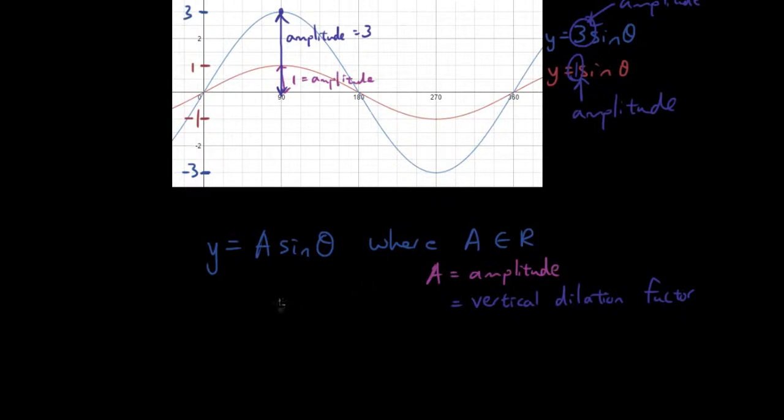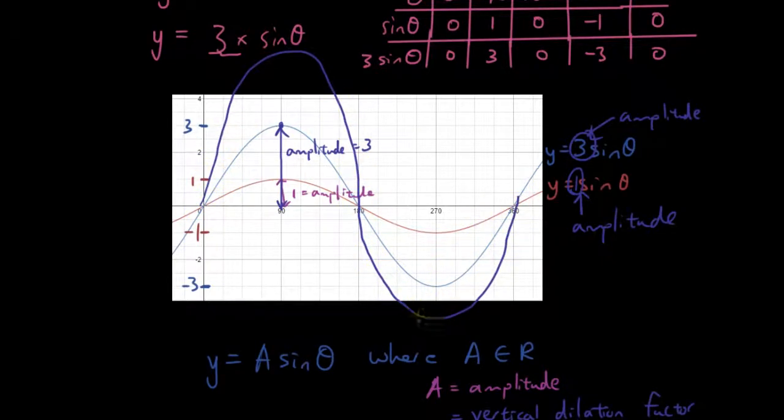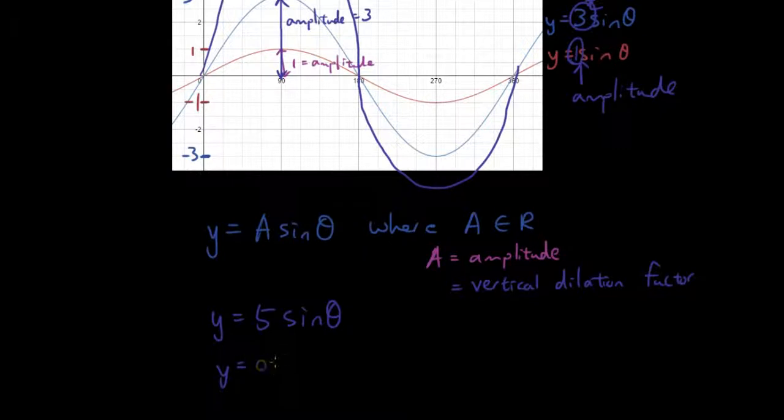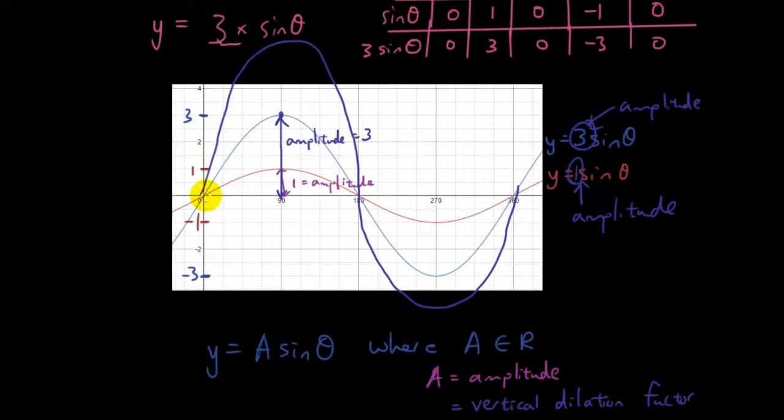Without drawing the graph, you can probably imagine y equals 5 sine theta, what it is going to look like. Basically, the graph is going to be even higher and even lower, like that. And if we have, for example, y equals 0.5 sine theta, we have vertically compressed it. Instead of stretching it, we have compressed it, so it will look something like this. I know that looks messy, so I am going to draw a better version for you in Desmos.